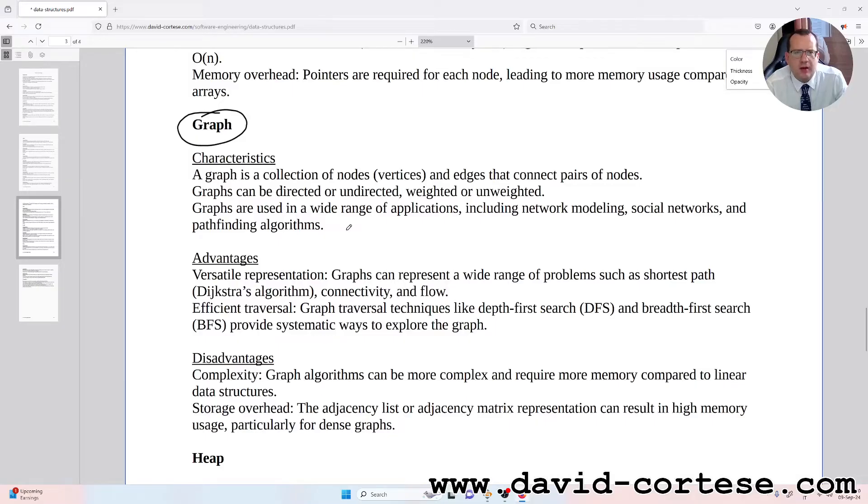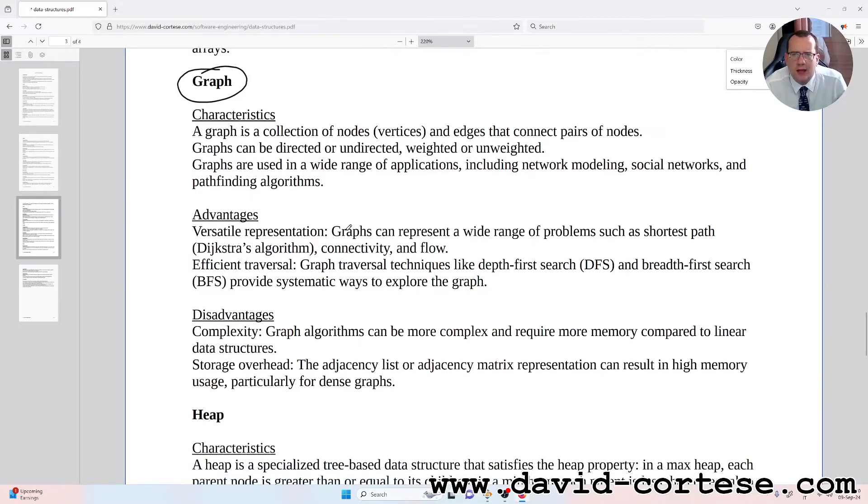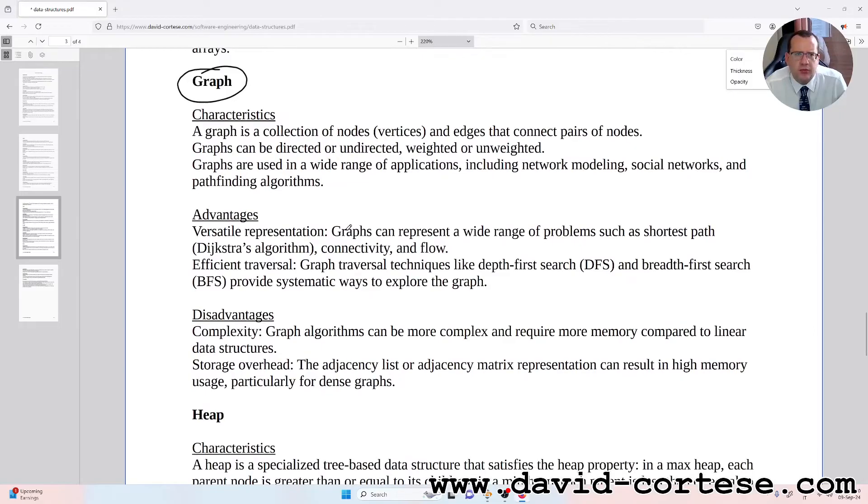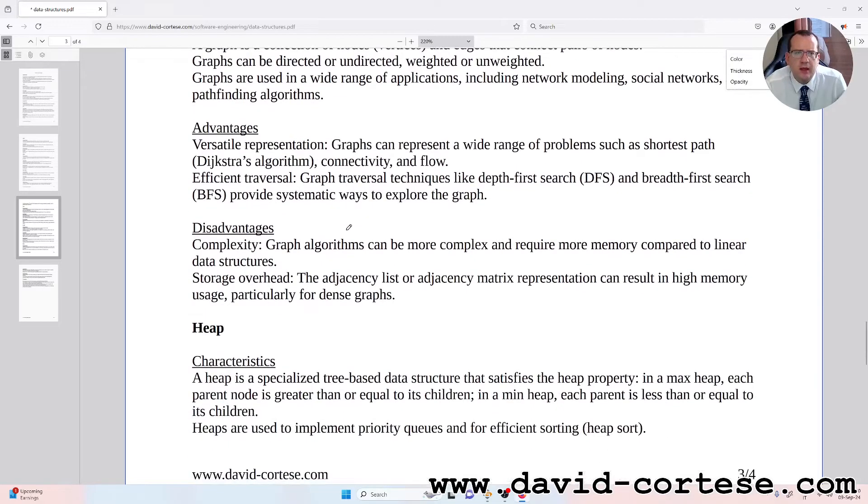Graph characteristics: a graph is a collection of nodes or vertices and edges that connect pairs of nodes. Graphs can be directed or undirected, weighted or unweighted. Graphs are used in a wide range of applications including network modeling, social networks, and pathfinding algorithms.